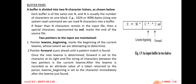There are two pointers. The first pointer is the lexeme beginning and the second pointer is the forward pointer, shown as a bold letter. The lexeme beginning pointer indicates the beginning of a particular lexeme. The forward pointer moves forward from left to right to identify the particular token.